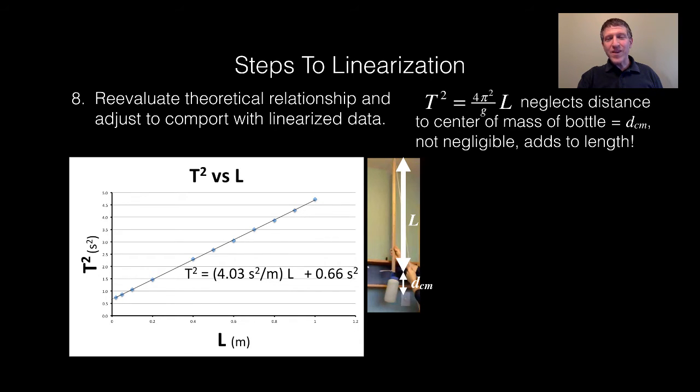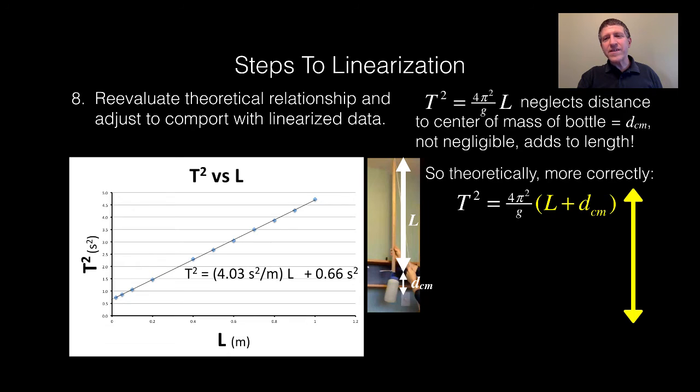Now, luckily, with this linearization method, you don't have to re-plot anything. Everything's already there. All the information we need is already in our line of best fit. All I've got to do is figure out what it means. So check this out. Instead of L, I really should be more correctly using L plus the distance to the center of mass, where L is the length of the rope, and d to the center of mass is how far it is from the attachment point to the center of mass of the water bottle. So that's my actual length of the pendulum. That is a more correct theoretical relationship.